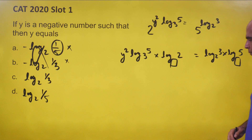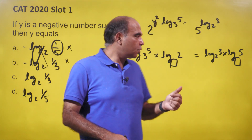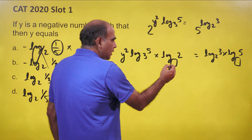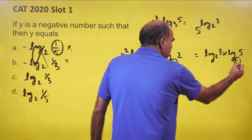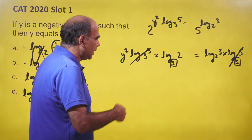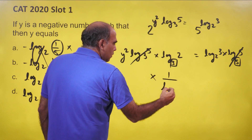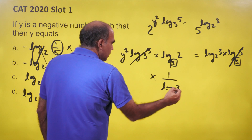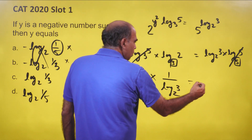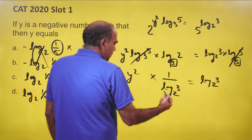That's where your vision comes into the picture. You should take base 3, because if I take base 3 on both sides, two things happen: one, the log 5 cancels out, and this term becomes 1 over log 3 to the base 2 using the base change rule. So y² × that equals log 3 to the base 2.